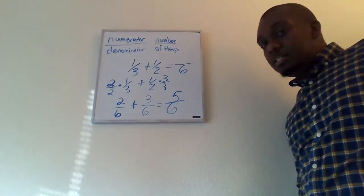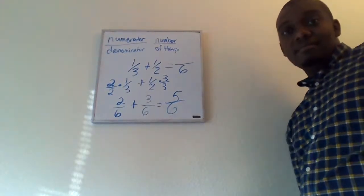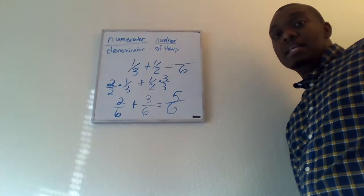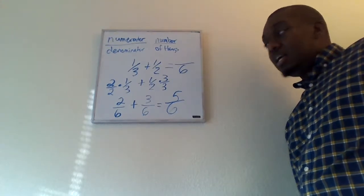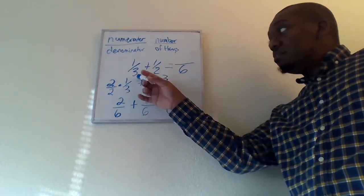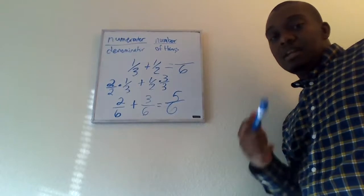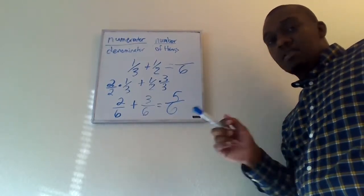Subtraction is no different. The only thing is, at the end, you subtract instead of add. All right, so that is how you add and subtract with fractions. They must be of the same type, must be the same thing, must be the same denominator first in order to add or subtract them. If they are not the same denominator, you cannot just add across.